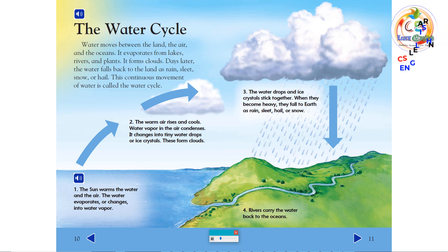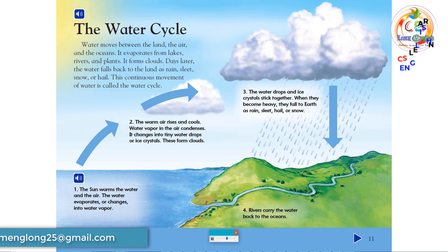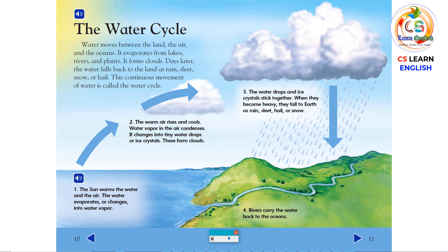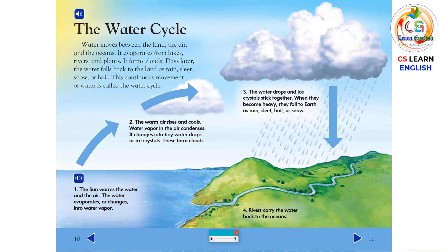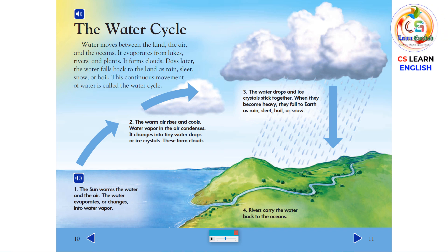Water moves between the land, the air, and the oceans. It evaporates from lakes, rivers, and plants. It forms clouds. Days later, the water falls back to the land as rain, sleet, snow, or hail. This continuous movement of water is called the water cycle. The sun warms the water and the air. The water evaporates, or changes, into water vapor. The warm air rises and cools. Water vapor in the air condenses. It changes into tiny water drops or ice crystals. These form clouds.